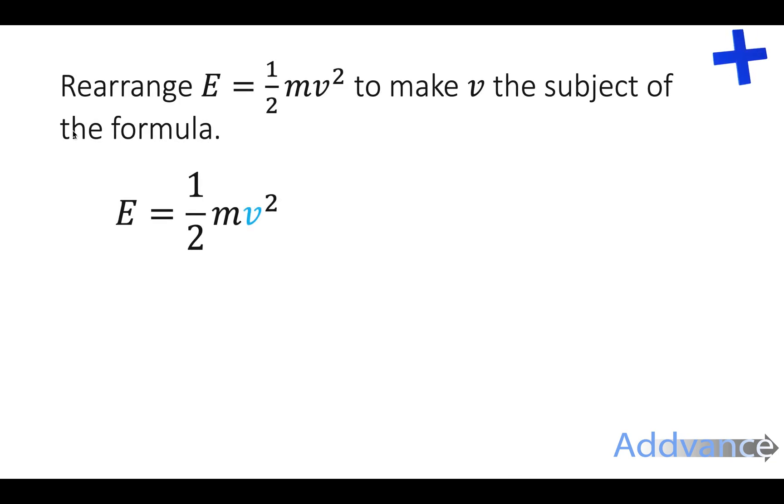Let's see some examples. We want to rearrange E equals half mv squared to make v the subject of the formula. This is a really famous equation in physics and so you will have to use this in physics. E equals half mv squared. And we want to make v the subject of the formula. I've highlighted v to make it easier.